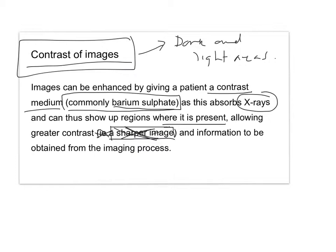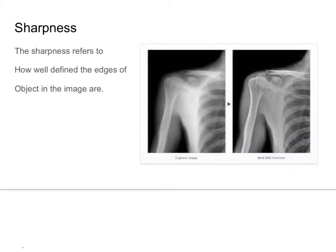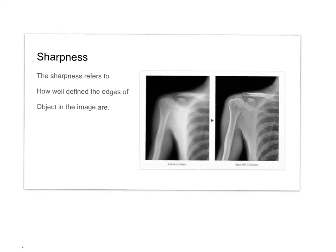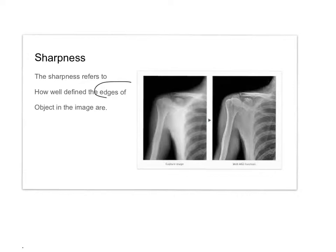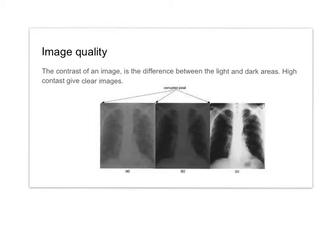So that's one way of increasing contrast. Sharpness is a different thing. Sharpness refers to how well-defined the edges of the object in the image are. You can see here we have a very sharp image, and we'll have a look at how to improve that in a minute. Image quality is about the contrast — and this gives you a really good example of what contrast looks like. This is low contrast, and this is very high contrast. It's the difference between the clear and the dark areas.